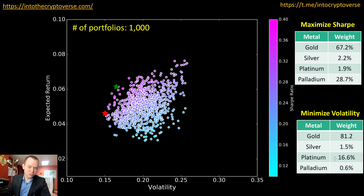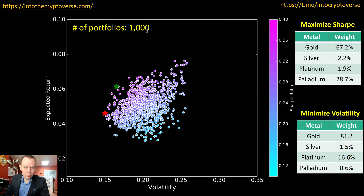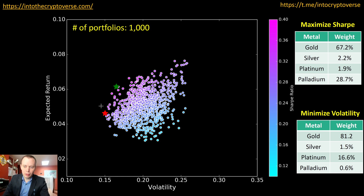Let's run more portfolios, because 100 isn't very many. I want you to see the bullet shape of the efficient frontier develop using modern portfolio theory. Running 1,000 portfolios, gold increased from 43% to 67%, with 2.2% silver, 1.9% platinum, and 28% palladium to maximize the Sharpe ratio. To minimize volatility with 1,000 portfolios, it would be 81% gold, 1.5% silver, 16.6% platinum, and 0.6% palladium.